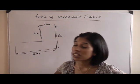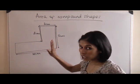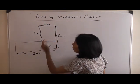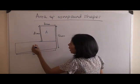What you need to do is look at your shape and split it into rectangles. I'm going to draw a line here, and we have rectangle A and rectangle B.